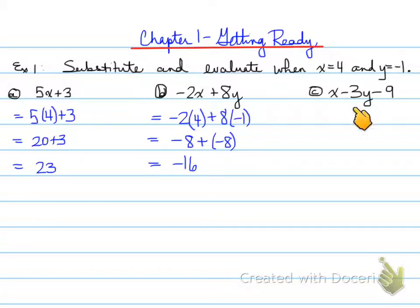Let's go to the next one. Substituting x with 4, negative 3 is negative, minus 3 is still there. Then where y, we're substituting negative 1, minus 9. So we have 4, plus 3, minus 9, and the result will be negative 2.